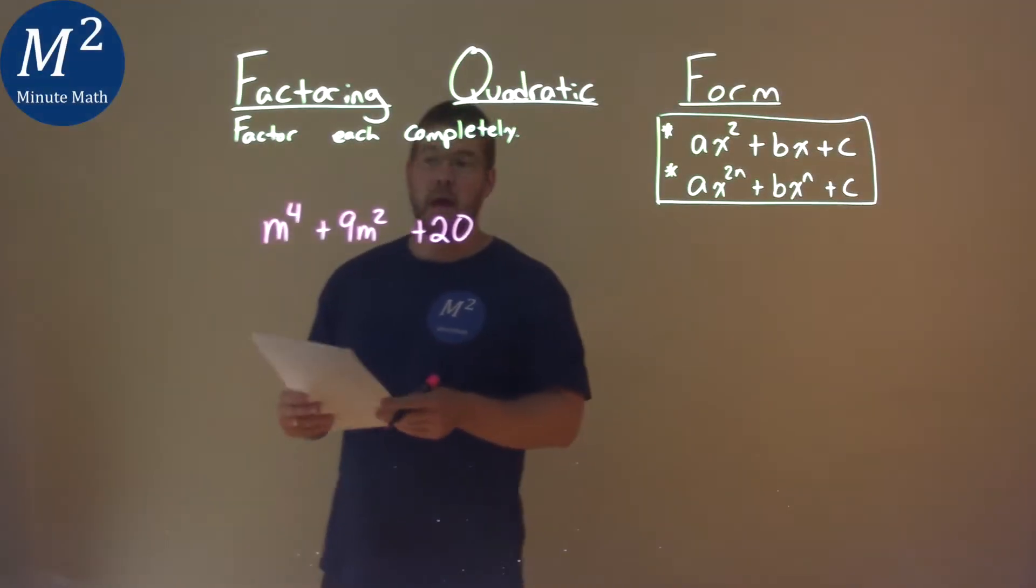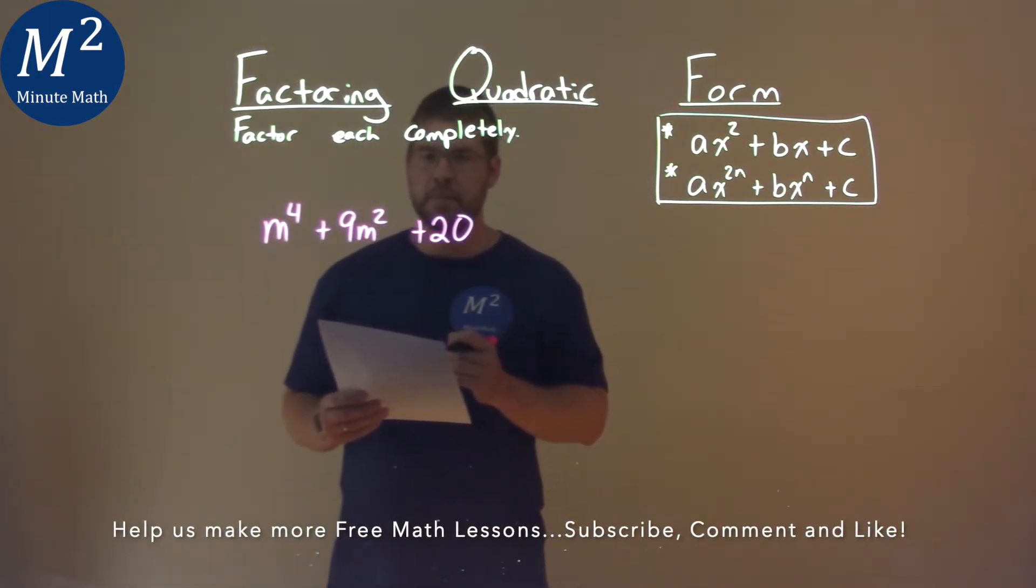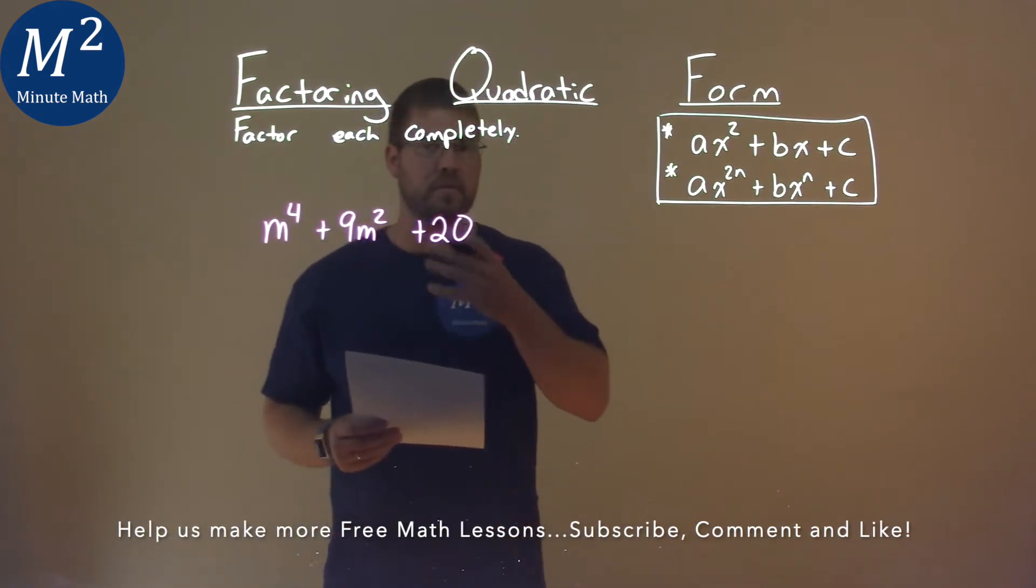We're given this problem right here, m to the 4th plus 9m squared plus 20, and we need to factor completely. Since it's in quadratic form, we can really follow the same processes of a quadratic.